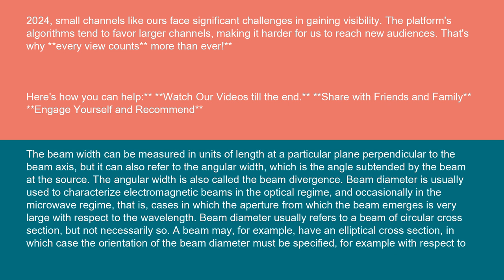The beam width can be measured in units of length at a particular plane perpendicular to the beam axis, but it can also refer to the angular width, which is the angle subtended by the beam at the source. The angular width is also called the beam divergence. Beam diameter is usually used to characterize electromagnetic beams in the optical regime and occasionally in the microwave regime, that is, cases in which the aperture from which the beam emerges is very large with respect to the wavelength.